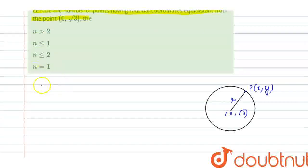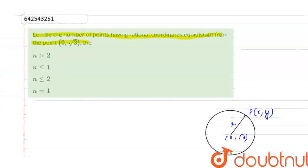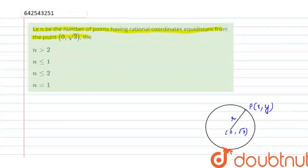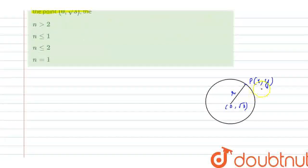So, this is the diagram. This is the center which is at point (0, √3). Now, the question asks about the number of points having rational coordinates equidistant from the point. So this P is a random point on the circle which is equidistant from this point. And all these points in the circumference of the circle will be equidistant.